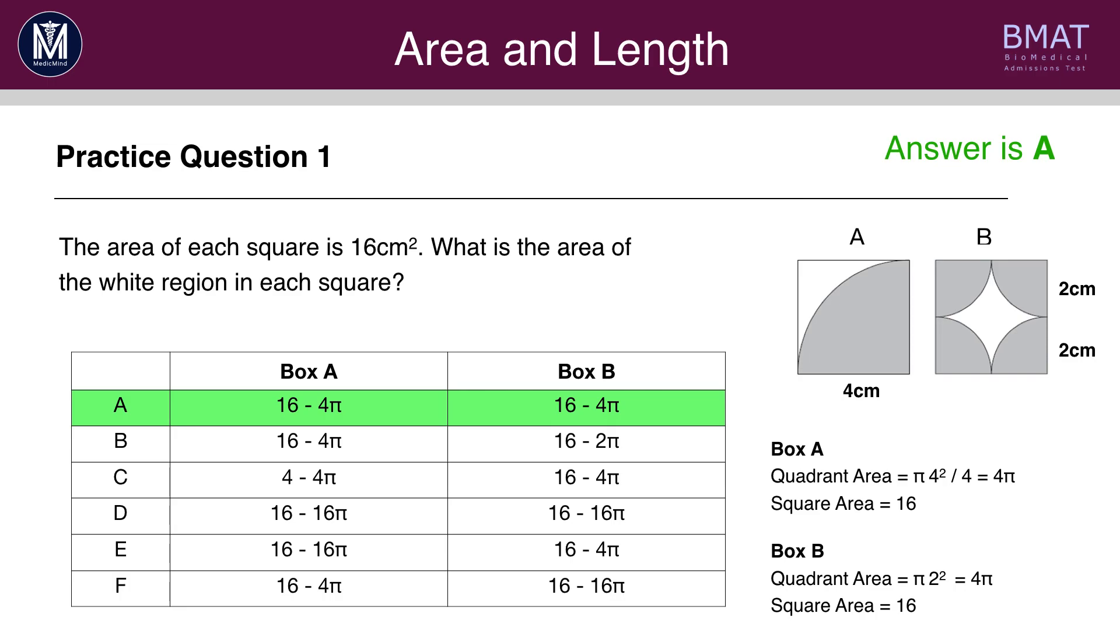And this full circle has a radius of 2 centimetres. Therefore, we can apply π r². Pi r squared, on this occasion, equals 4π. And we don't have to divide by 4, or divide by anything, because we have one full circle, if we add together the 4 quadrants. So therefore, again, the area of the white region would be 16 - 4π. So the answer is A.